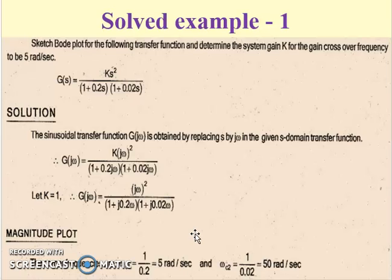Since the given transfer function is already in the Bode form or the Time Constant form, the first step will be to directly substitute s equals j omega to obtain the sinusoidal transfer function. Substituting s equals j omega, we have G(j omega) equals (j omega)² divided by (1 + j 0.2 omega) times (1 + j 0.02 omega). Note we can substitute K equals 1.